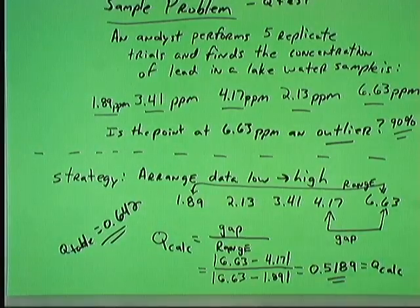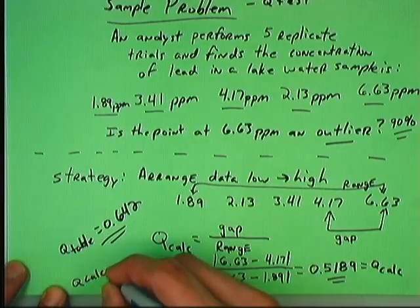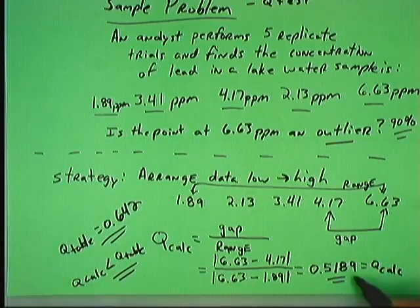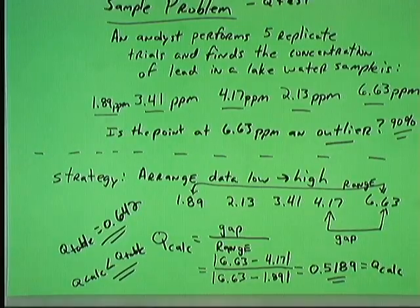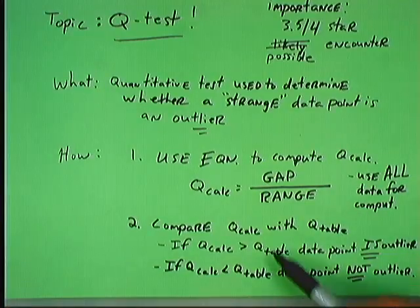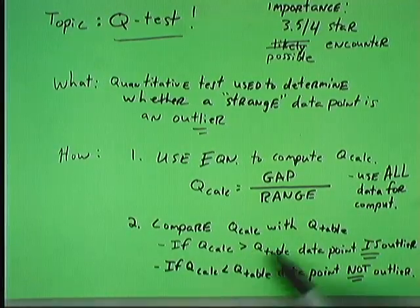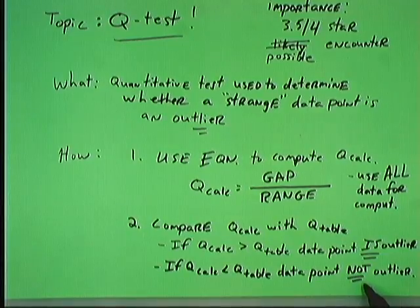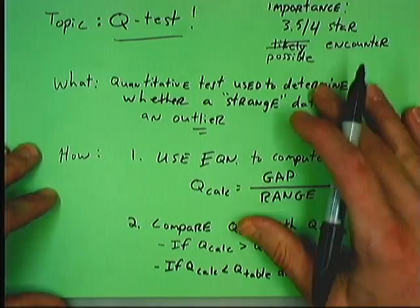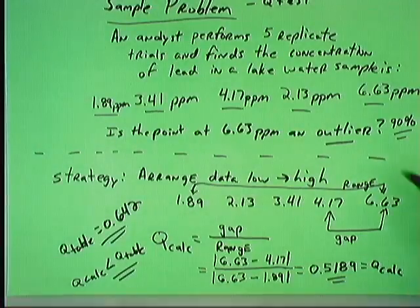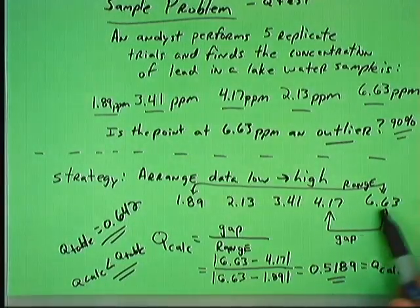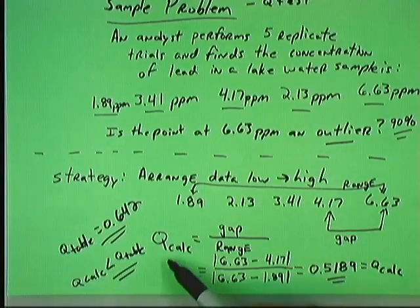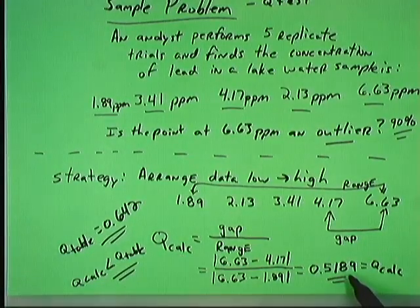My calculated value is 0.518. So what do I know? My QCalc is less than my QTable in this example. This is smaller than the tabular value. And that's significant. Because if I go back, remember in my instructions I was supposed to compare the magnitude of QCalc with QTable. If the calculated value is smaller, the data point is not an outlier. And again, we can justify that by this definition of how to compute Q. Gap divided by range. Remember, the gap was this distance between the possible outlier and the next nearest point. And the range was the high minus the low. So the bigger the gap becomes, the bigger this number becomes, the bigger QCalc is. So it makes sense that QCalc needs to be bigger than the tabular value to reject.